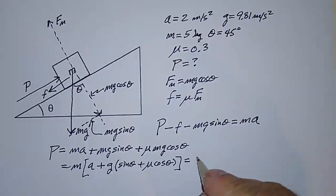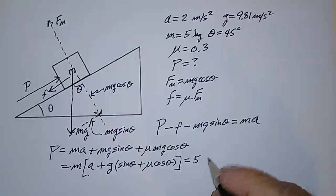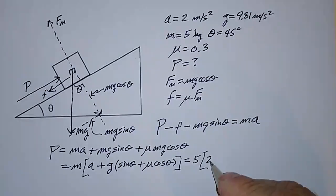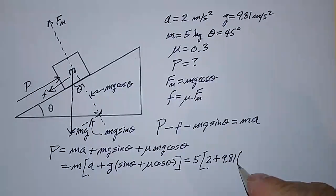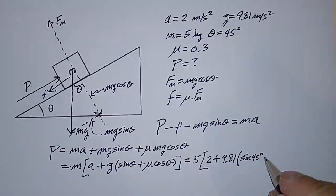And if I want to plug in the numbers, M was 5 kilograms, A is 2 meters per second squared plus G, which is 9.81 meters per second squared times the sine of 45 degrees plus mu, which is 0.3 times the cosine of 45 degrees.